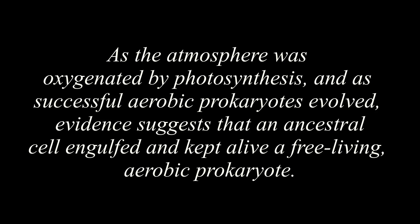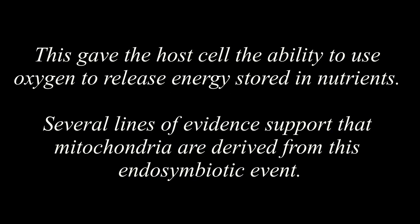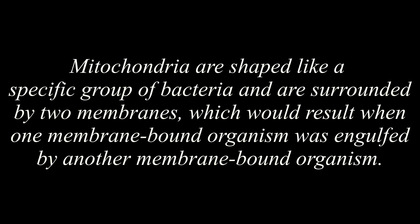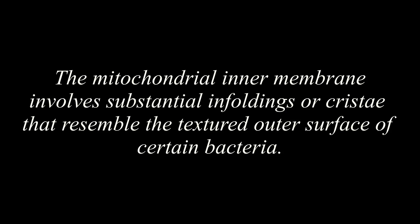As the atmosphere was oxygenated by photosynthesis and as successful aerobic prokaryotes evolved, evidence suggests that an ancestral cell engulfed and kept alive a free-living aerobic prokaryote. This gave the host cell the ability to use oxygen to release energy stored in nutrients. Several lines of evidence support that mitochondria are derived from this endosymbiotic event. Mitochondria are shaped like a specific group of bacteria and are surrounded by two membranes, which would result when one membrane-bound organism was engulfed by another membrane-bound organism.